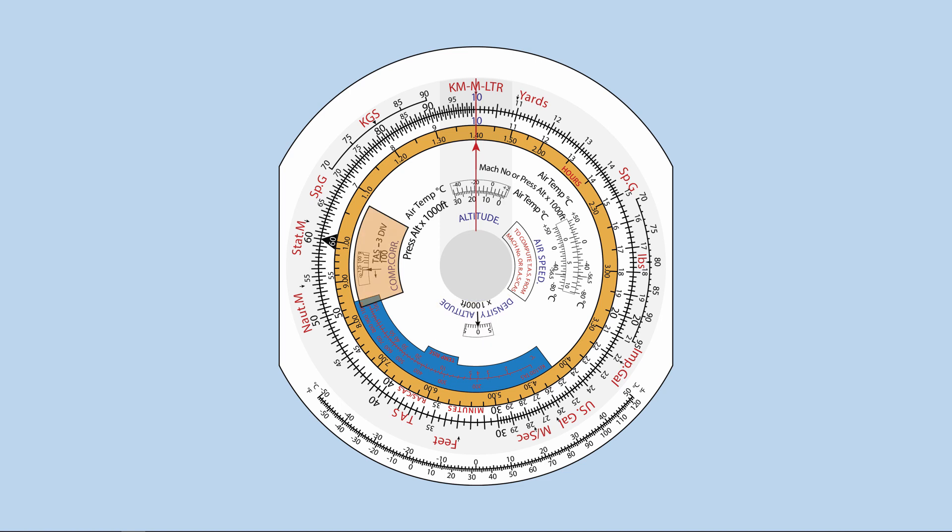Compressibility correction window. This window is used to apply compressibility correction for the true airspeed that is more than 300 knots.